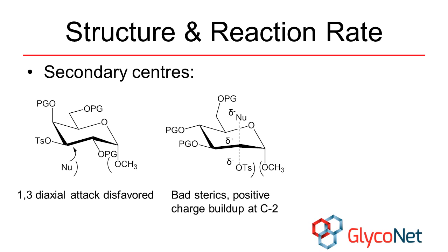During substitutions, the ring must flatten to form the transition state, which may lead to eclipsing interactions among some substituents on pyranose rings.